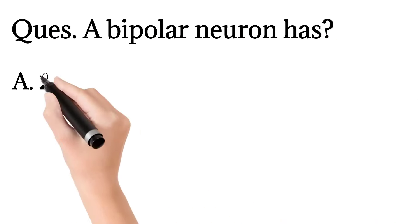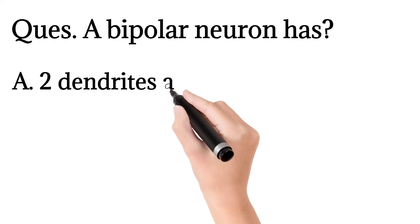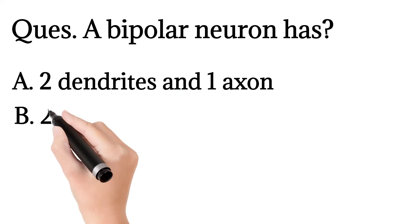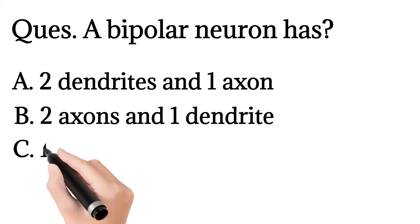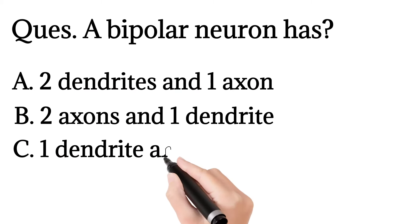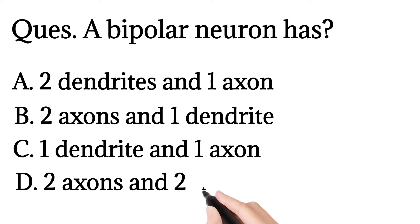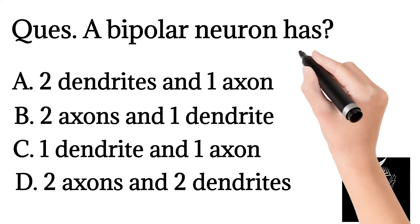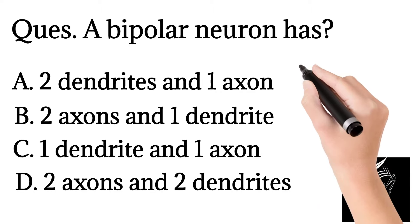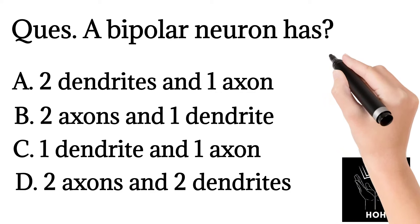6. A bipolar neuron has: 2 dendrites and 1 axon; 2 axons and 1 dendrite; 1 dendrite and 1 axon; or 2 axons and 2 dendrites.